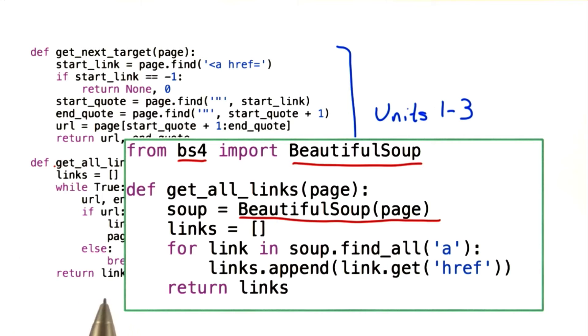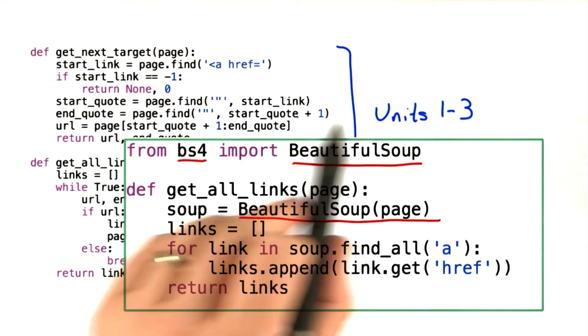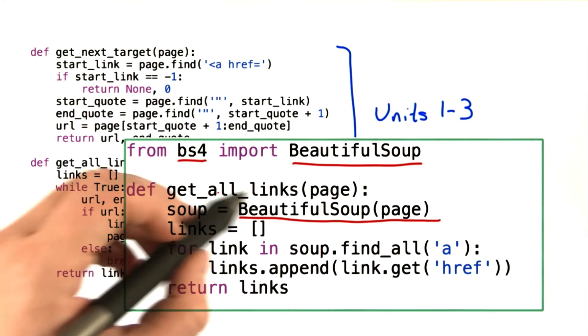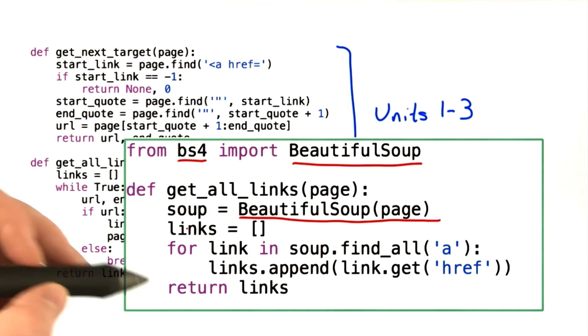So modules are a real big win. And we can use this without worrying about it polluting our namespace because we know the only name that we've imported here is the name BeautifulSoup. And we've replaced these 18 lines of code with 6 lines that if you understand what the module does, are much easier to understand and much simpler than having to understand all 18 lines. And they work a lot better.